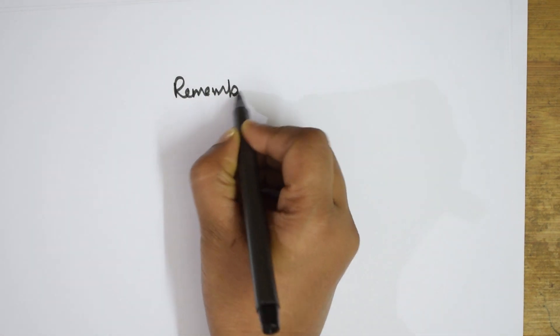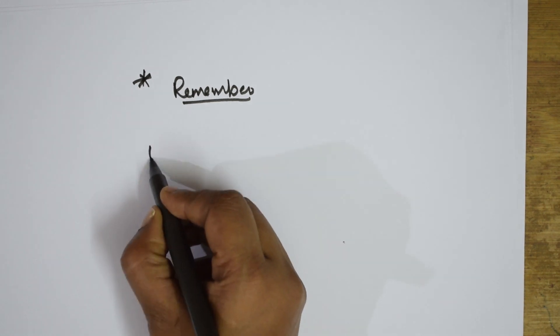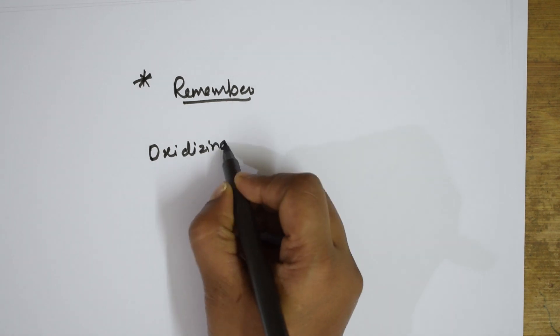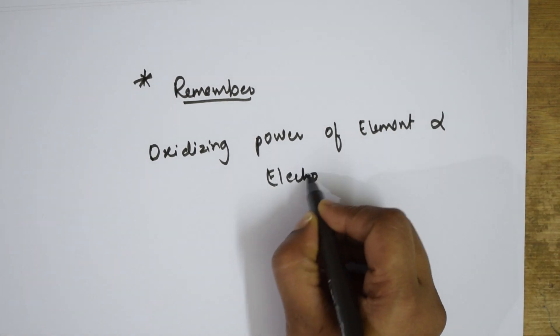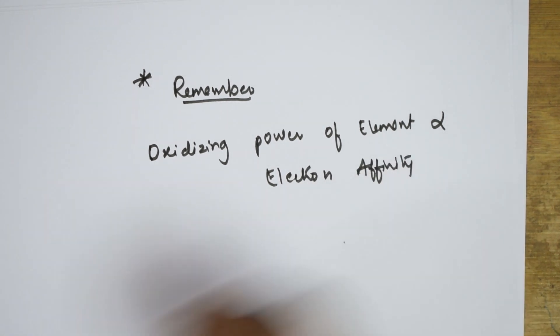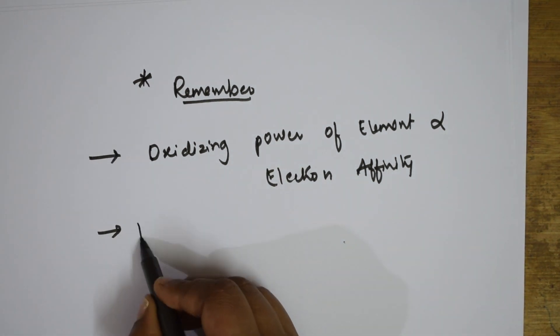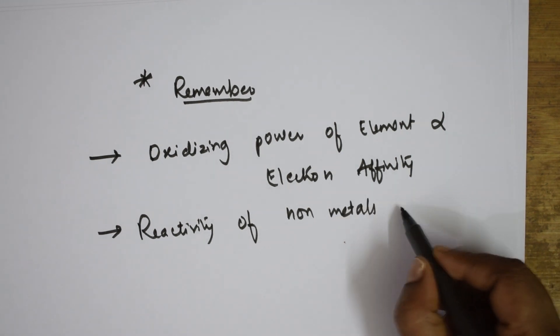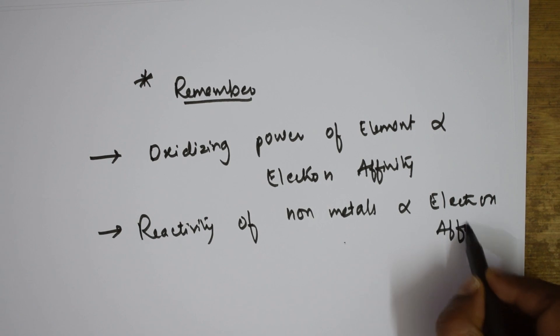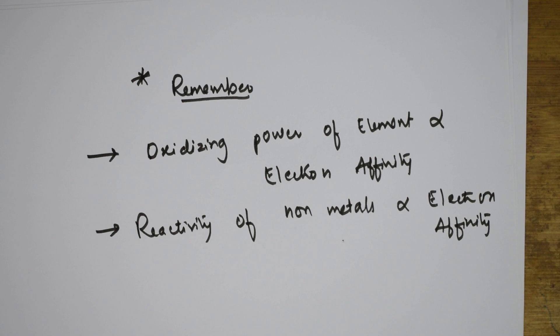One very important thing to remember in electron affinity: oxidizing power of an element is directly related to electron affinity. Remember the trends, and any question asked from any part will be easy. Thank you for watching. I will meet you again in the next topic — electronegativity.